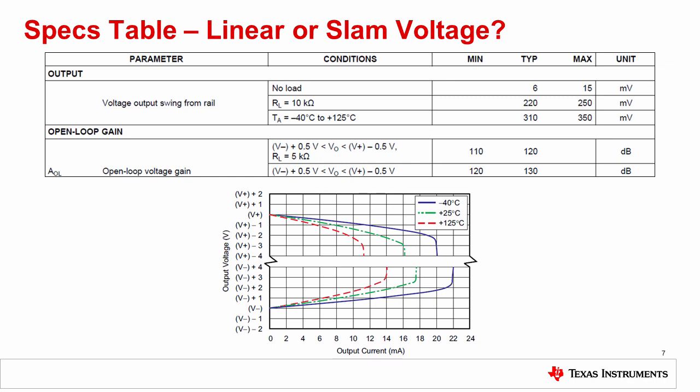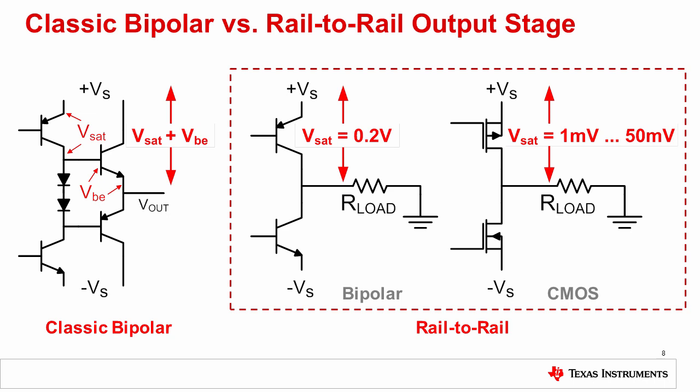In the previous example with the OPA 827, we showed that the output voltage range spec given in the table was for a linear output since the test condition defined an AOL greater than 120 dB. In general, when a high value of AOL is given in the test conditions of the output swing specification, you can be confident that the specification is implying linear operation. Let's now consider another device datasheet specs table. This table does not list a high AOL in the output range test conditions. Furthermore, the AOL specification later in the table gives a test condition of 500 millivolts away from the rail, while the output voltage range spec is only 220 to 350 millivolts away from the rail. This allows you to determine that the output voltage swing limit is actually a slam limit, and the linear output voltage range is actually 500 millivolts from each rail.